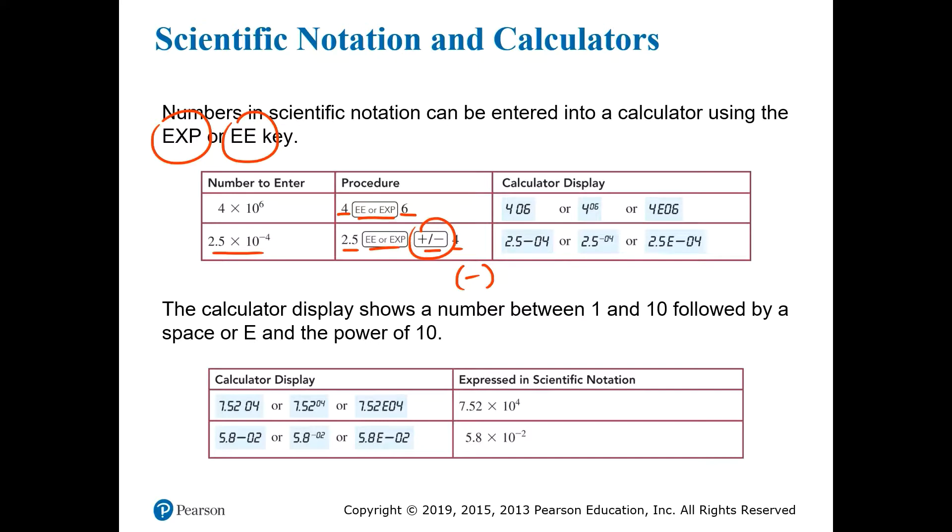You can see on the slide here that there are also a few different ways that calculators display a number in scientific notation. A few of them will actually show a little 10 to the power sign and then the exponent, but most of them display it in one of the ways you see here. The most common is for the coefficient to be followed by a small capital E and then the exponent, as you see here.